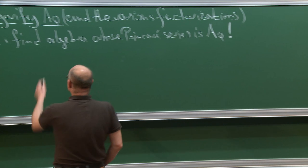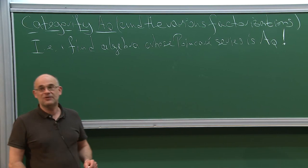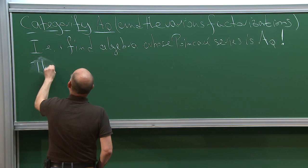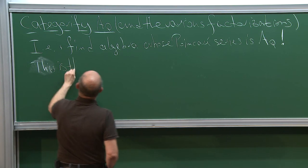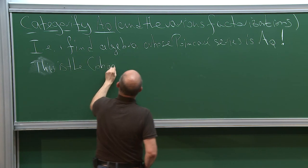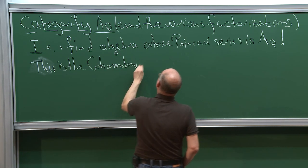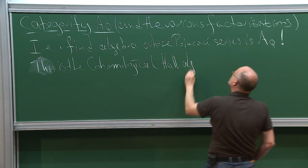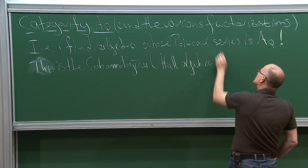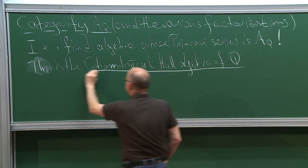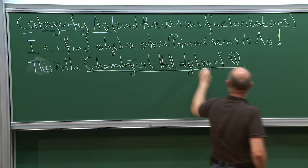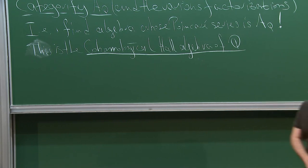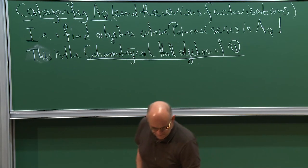This algebra is the so-called Cohomological Hall Algebra, or a candidate for this — the only known candidate in general. This is the Cohomological Hall Algebra of Q. That's the algebra I will now introduce as precisely as possible, and then try to give you a bit of a feeling of its features.